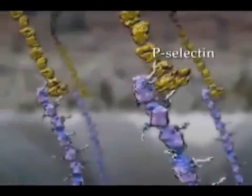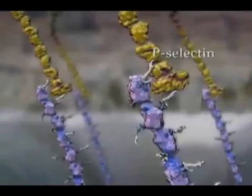Leukocytes roll slowly on endothelial cells. P-selectins on endothelial cells interact with PSGL1, a glycoprotein on leukocyte microvilli. Leukocytes, pushed by the blood flow, adhere and roll on endothelial cells because existing interactions are broken, while new ones are formed.